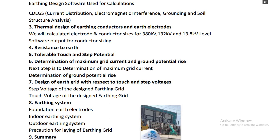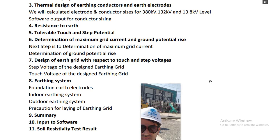The determination of maximum grid current and ground potential rise are the next topics. The short circuit level is provided by the client, and the grid is designed based on this. We will show the calculations for how the maximum grid current is determined. It is very important to know the short circuit level of your substation, which depends on how many transformers you have, how many lines are connected, the percentage impedance of the transformers, the source impedance of the line, and the source impedance. We will go through these calculations in detail.